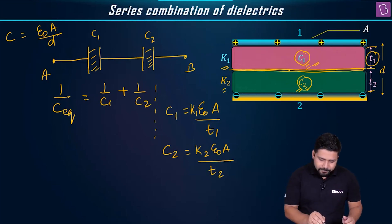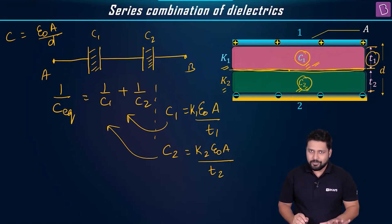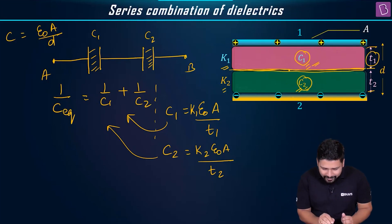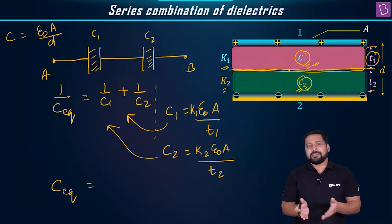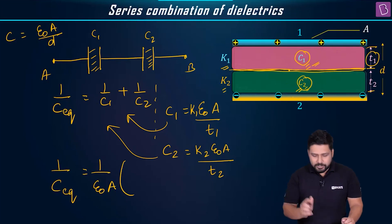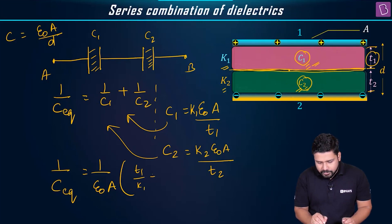Now, take these values, place it in this, and write down the final formula of c equivalent. What is going to be the value of c equivalent? You're going to get 1 by c equivalent will be equal to 1 by epsilon naught times a, you will have t1 by k1 plus t2 by k2.